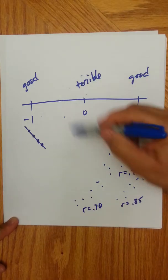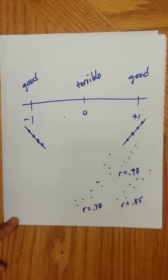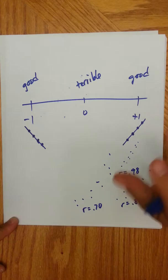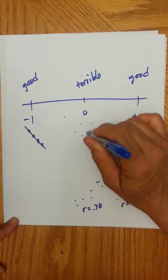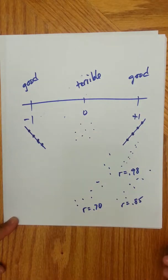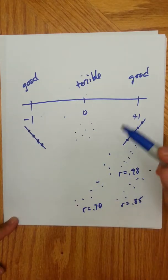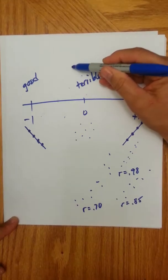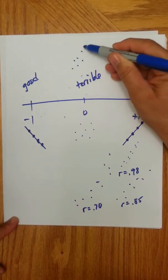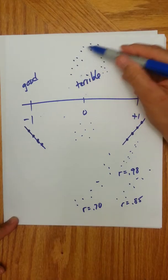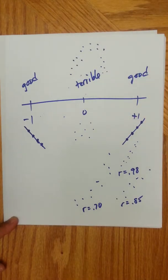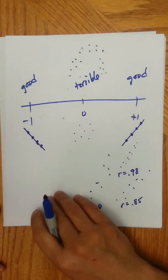Now, why would something have a correlation coefficient of 0, which means that you should not use a line at all? Well, it could be because you have, like, what I call the cloud. There's no pattern. Nothing would fit it. Or you might have something that, really, a line was never intended to model. So let's say you have something that's almost like a parabola, like that, right? It's curved. Well, a line wasn't ever intended for that.